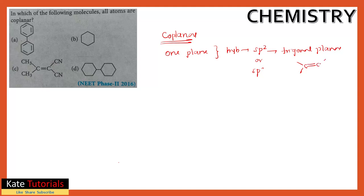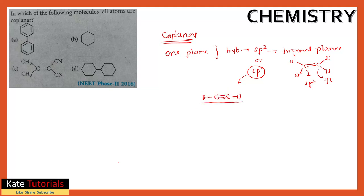For example, in an alkene with hydrogens, the structure is planar because the hybridization of the carbon is sp2. For sp hybridization, consider C triple bond C — the H and H are in a linear shape, and linear means all atoms lie in one plane.